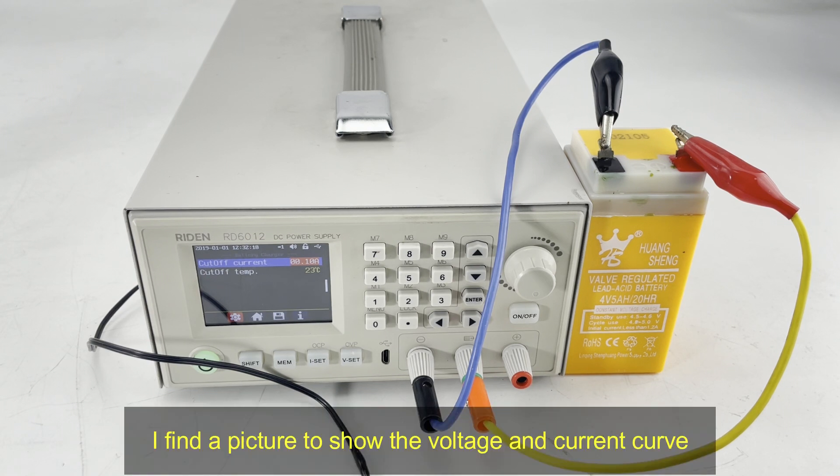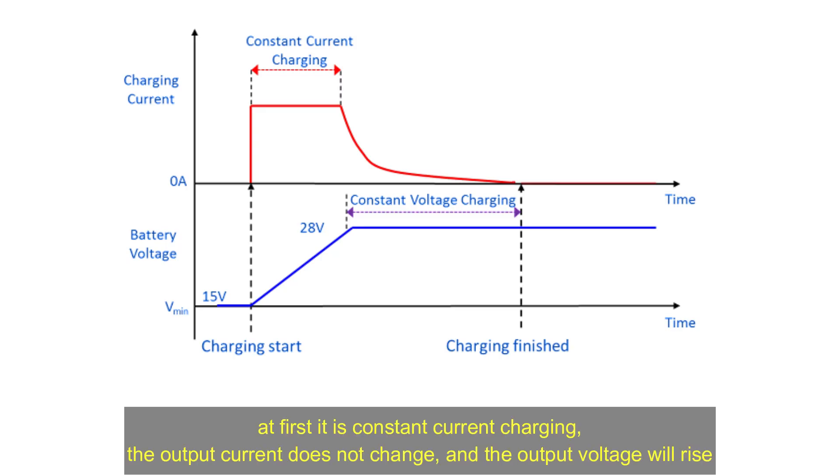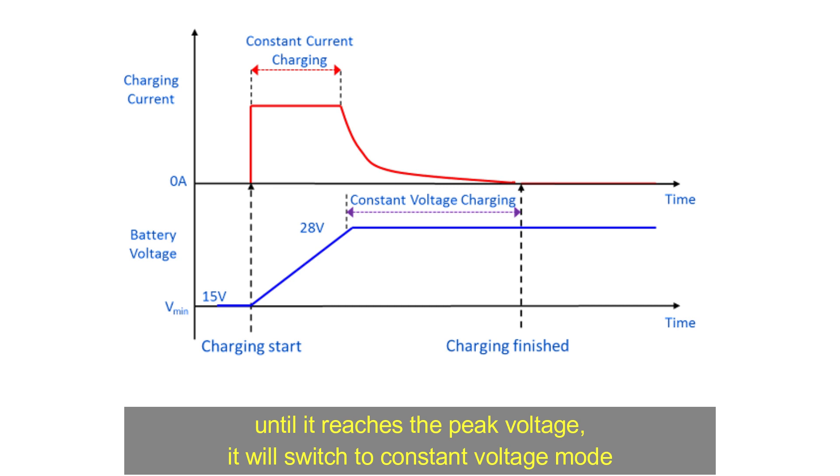I find a picture to show the voltage and current curve. At first, it is constant current charging mode. The output current does not change, and the output voltage will rise until it reaches the peak voltage.